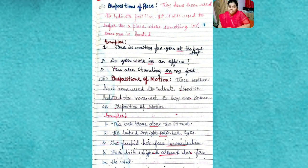Last but not the least is a third category of preposition which is called by two names: prepositions of motion or prepositions of movement. These have been used to indicate direction—direction related to movement, so they are known as preposition of movement or motion, moving here and there. Examples, again.